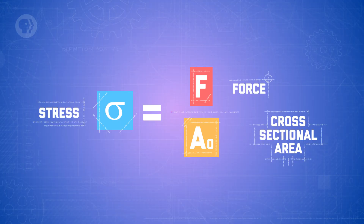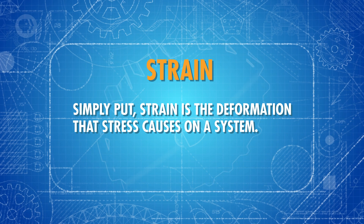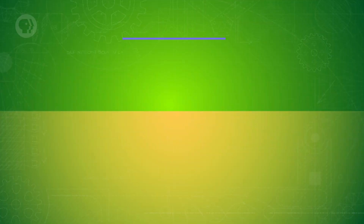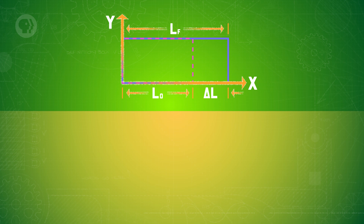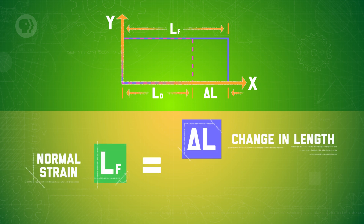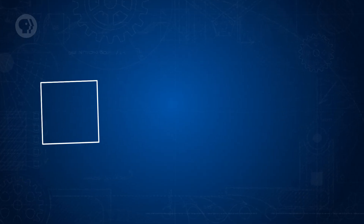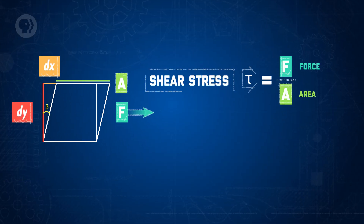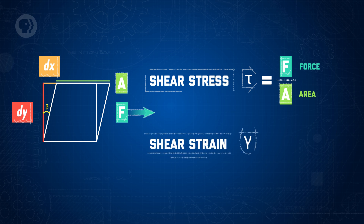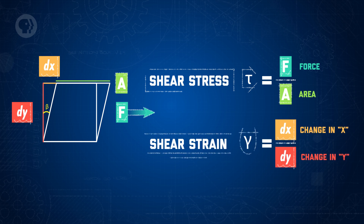We can find stress by taking the applied force and dividing it by our cross-sectional area. Once the fluid is stressed, the degree to which it stretches is called strain. Simply put, strain is the deformation that stress causes on a system. If the deformation causes something in a system to become either shorter or longer, then we can find its strain by taking the change in length and dividing it by the initial length — this is called normal strain. But if the deformation is a change in angle between two segments that had been perpendicular to each other, then we have shear strain, found by subtracting the change in angle from the original angle, which will either be π/2 or 90 degrees, depending on your units.